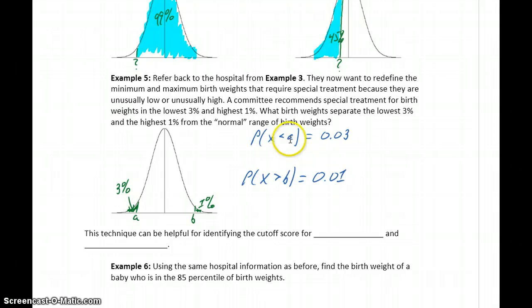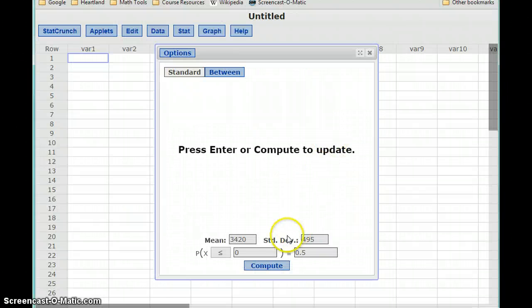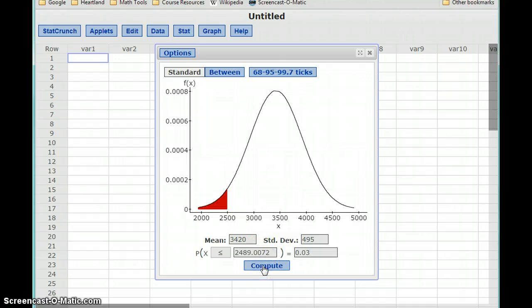So now we want to find these two different values that result in this given probability. So we want X to be less than or equal to something, and that probability should be 0.03. So as we start typing that in, this box becomes blank, until we compute, and we get a value of 2,489. So when we put in the probability, StatCrunch will find the value that completes that calculation.